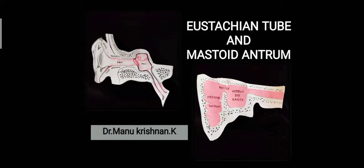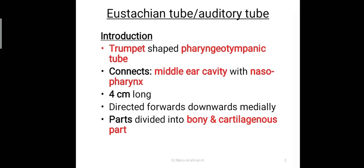Hi everyone, this is Dr. Manu Krishnan K and today we discuss about the Eustachian tube or the auditory tube and the mastoid antrum. The Eustachian tube, or auditory tube, is a trumpet-shaped pharyngeo-tympanic tube. The term pharyngeo-tympanic denotes its connections — it connects between the tympanic cavity or the middle ear cavity and the nasopharynx.